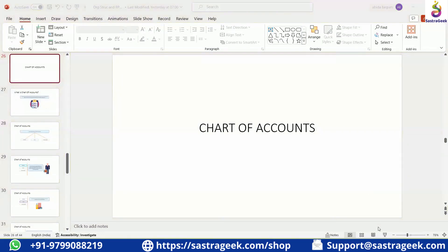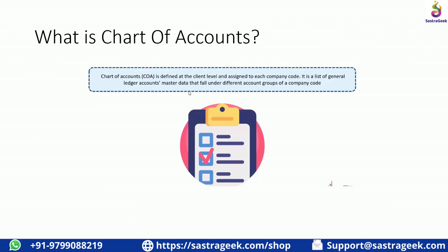Chart of Accounts is defined at the client level and assigned to each company code. Similar to how a posting period variant is created, a Chart of Accounts variant will be created and assigned at each company code. It's a list of general ledger account master data that falls under different account groups — a list of general accounts having multiple different account groups for a company code.